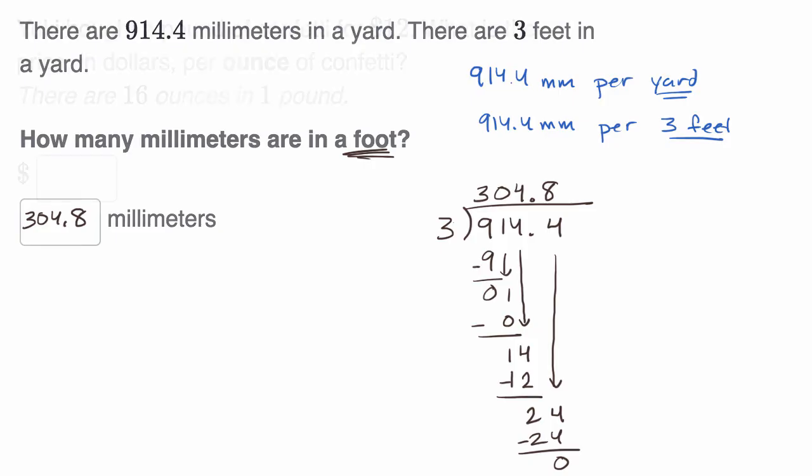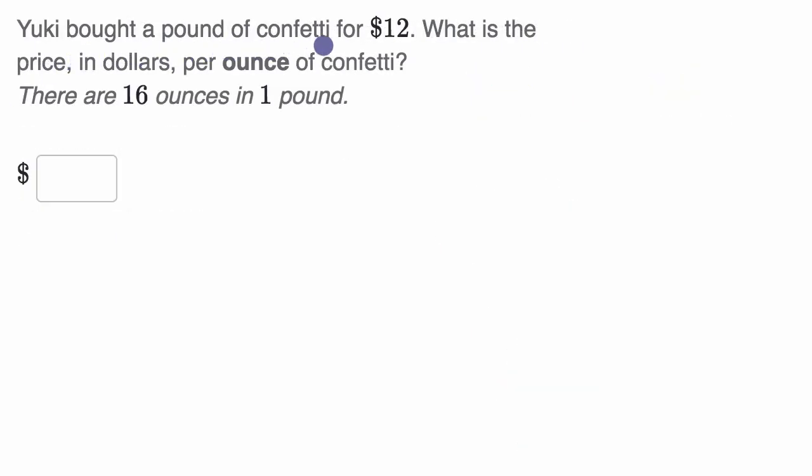Let's do one last example. Yuki bought a pound of confetti for $12. What is the price in dollars per ounce of confetti? There is 16 ounces in one pound. So pause this video and see if you can figure it out. So let's just write this out in words. So it's $12 per pound of confetti. You could view this as $12 per 16 ounces of confetti. And so if we want it per ounce, you could view this as a 12 to 16 ratio, but we want a something to one ratio. So if you say per one ounce, well we're dividing by 16 there, so we would want to divide by 16 as well. So this is going to be 12 divided by 16.